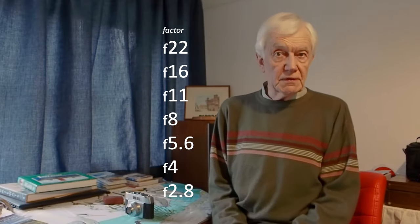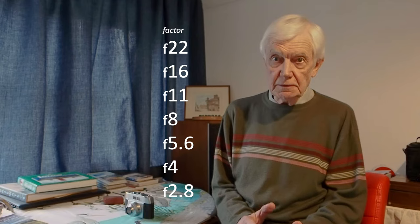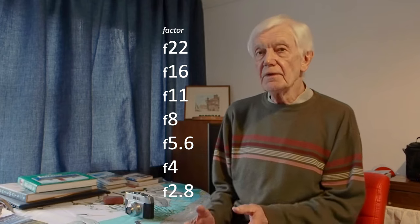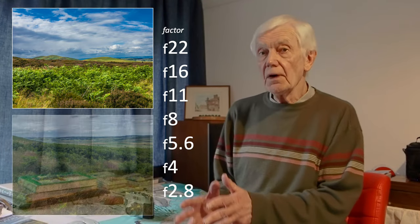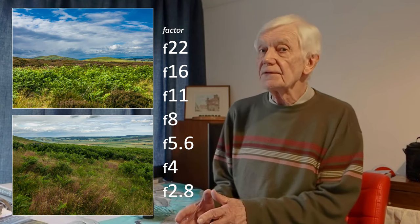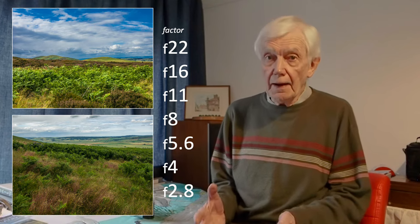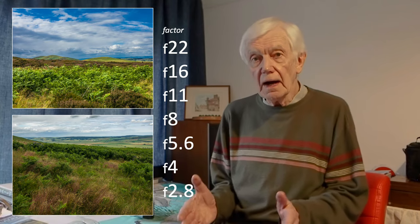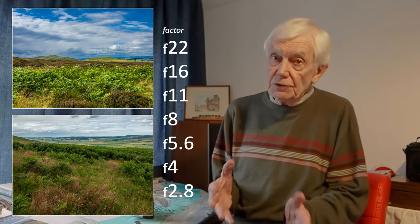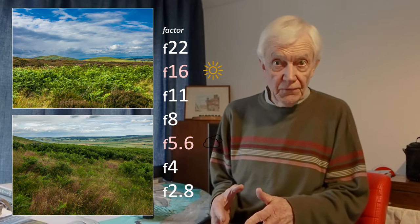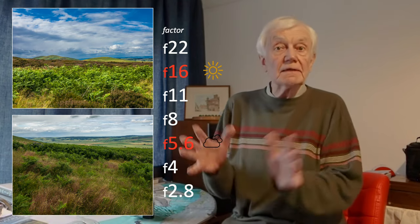Maybe the simplest way I can present how shutter speeds and apertures work together to give a correct exposure is to give you an example of a landscape taken on a sunny day and a similar one taken on a dull day. The intensity of light on a dull day is much less, so the camera has to make important adjustments — otherwise you're going to end up with an underexposed picture. It will do that by either changing the shutter speed or the aperture or a bit of both. With today's computerised cameras, it does it all for you.